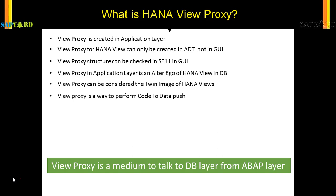To explain in layman's terms: whenever we create a HANA model — which can be an attribute view, an analytical view, or a calculation view — we can create a corresponding view in the ABAP layer, and that view is called a view proxy. That view proxy is the image of the HANA model. So if that HANA model retrieves data from some tables, the view proxy will give you that same output. HANA models are for modelers to create, while the view proxy is for technical folks like ABAPers to consume and work with.